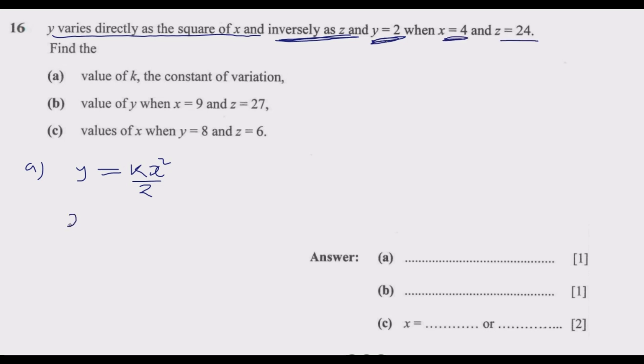So we substitute: we have 2 where there is Y. Then where there is X, we put 4. So we have K multiplied by 4 squared divided by 24. Once we have that, we can simplify. So we have 2 equals 4 times 4, which is 16, over 24.